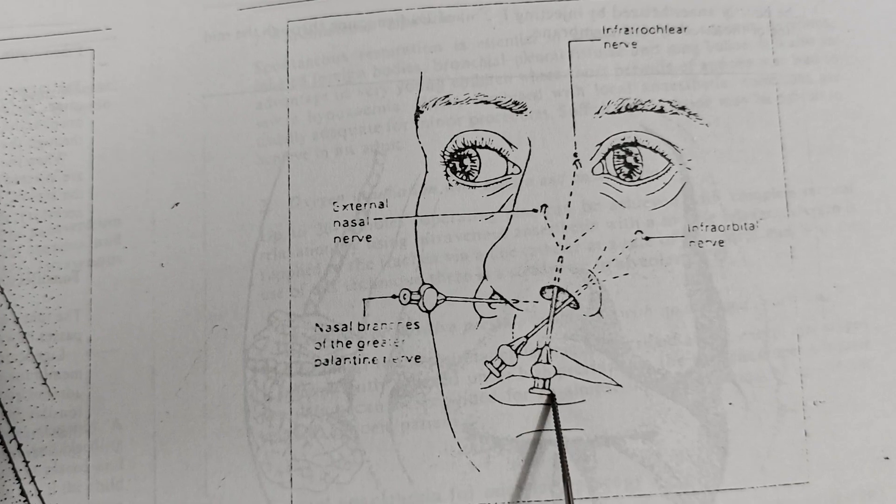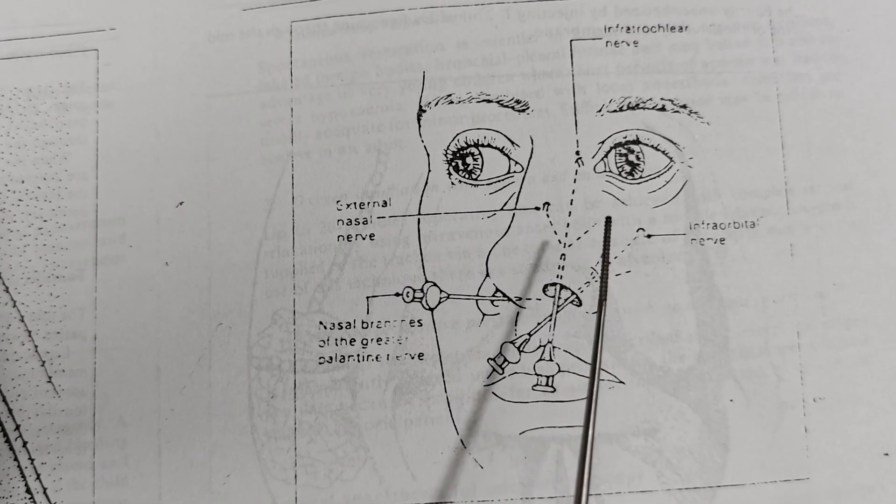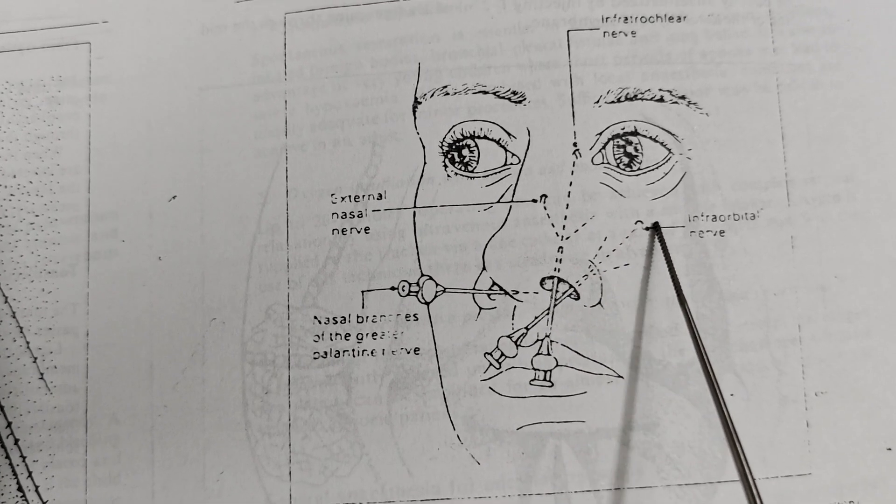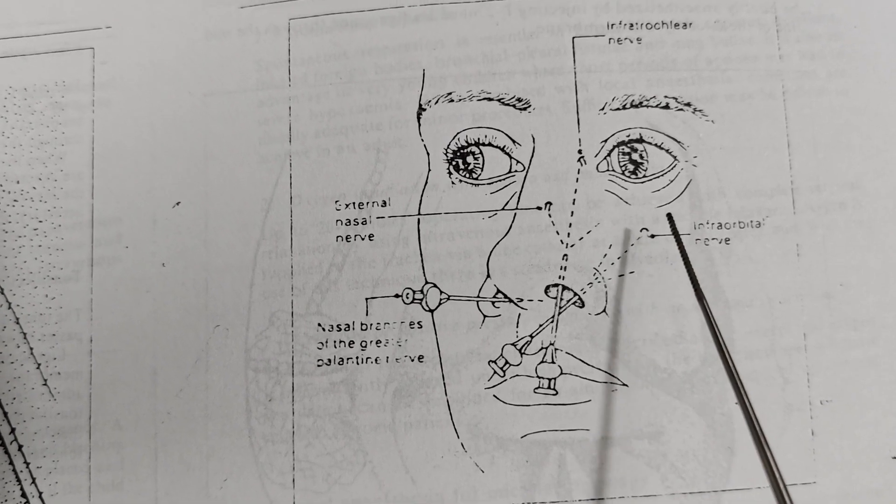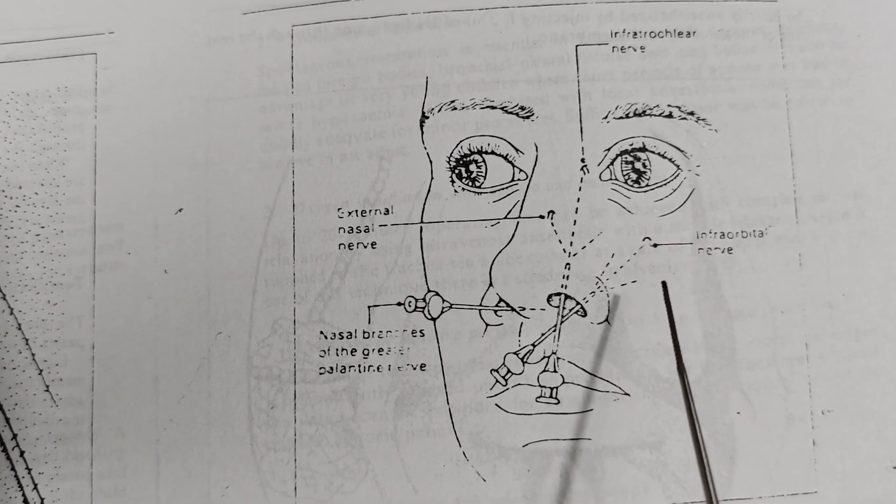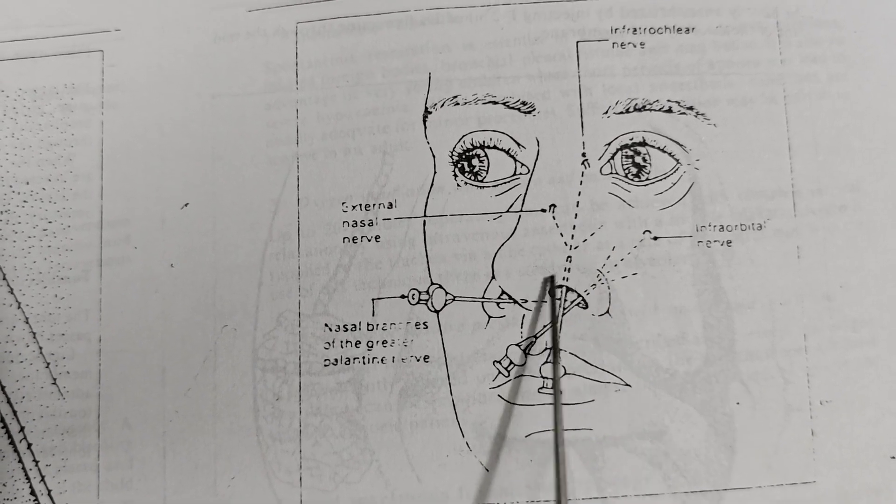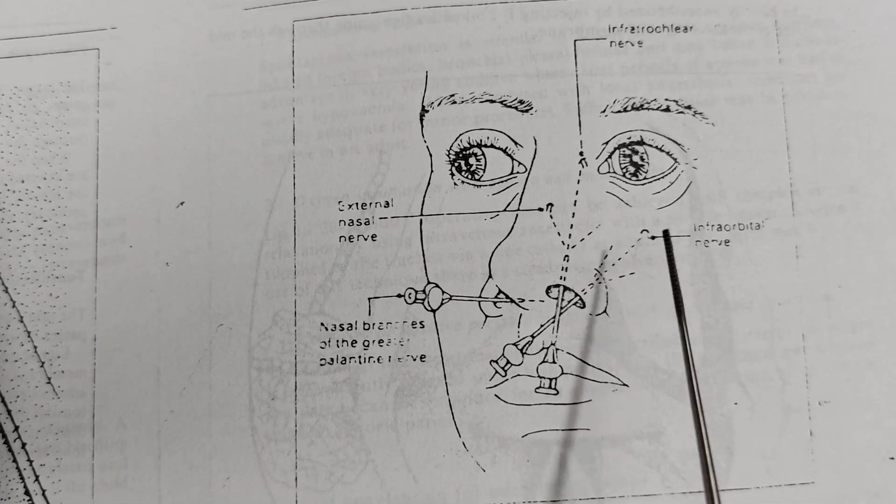During placing the needles, we have to be cautious because there is an artery in the infraorbital foramen along with this nerve. Piercing the artery and entering the local anesthesia into the artery may cause some adverse effects during the procedure.